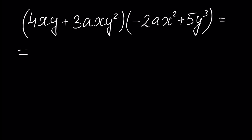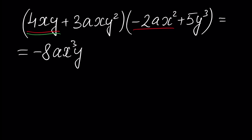Let's perform the multiplication. Multiplying the first monomial by the first monomial gives us minus 8ax cubed times y. Next, multiplying the first element by the second element of the second polynomial gives 4 times 5, which is plus 20, and y times y cubed gives y to the power 4, so plus 20xy to the power 4.